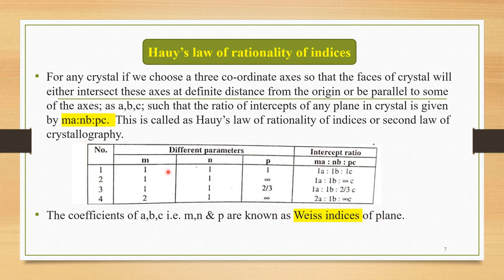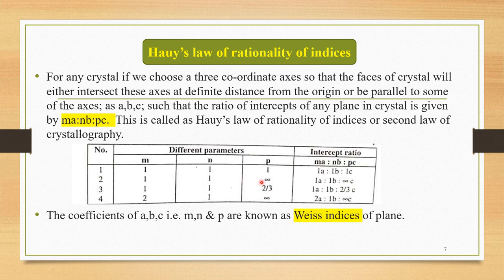This table gives possible values for M, N, and P and their intercepts ratio. If M=1, N=1, P=1, the intercepts ratio is 1a : 1b : 1c. If M=1, N=1, P=infinity, the plane has intercepts along the x and y axes but is parallel to the z-axis, giving an intercepts ratio of 1a : 1b : ∞c. These are the Haüy's indices under these circumstances.